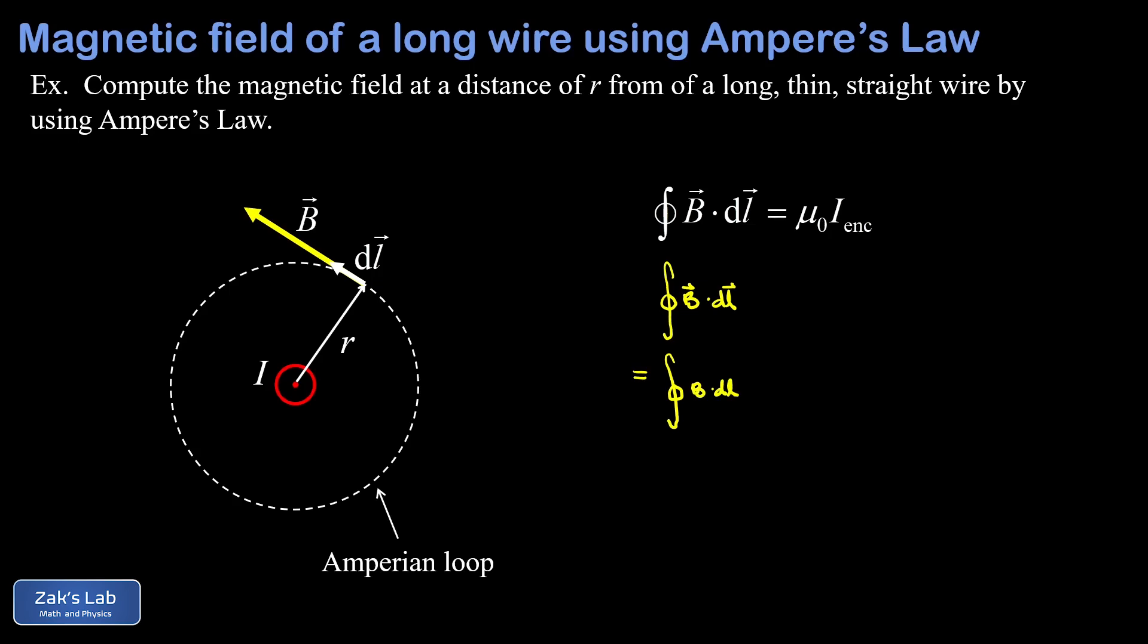Next, we realize that the magnitude of B is constant along the Amperian loop, and that's a symmetry issue. With a long line of current extending forever in both directions, there's no way to bias the magnetic field one direction or another. I can't say the field is stronger above the wire than it is below the wire.